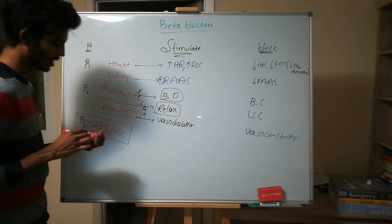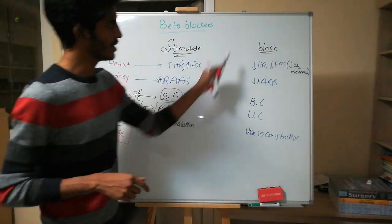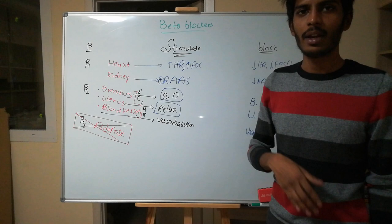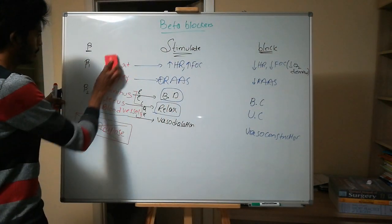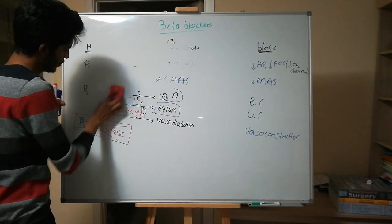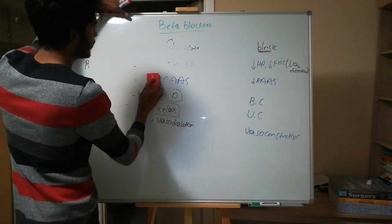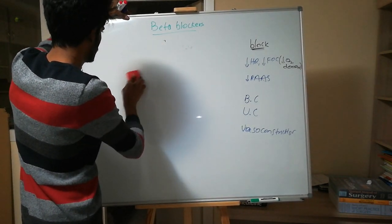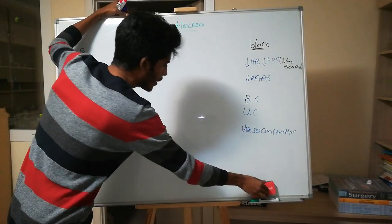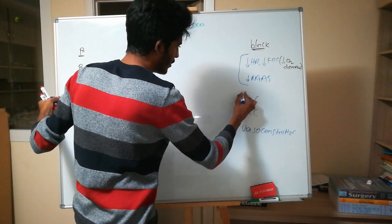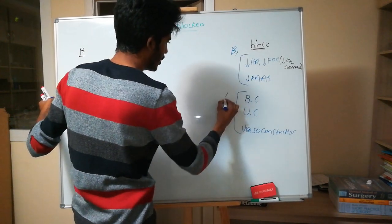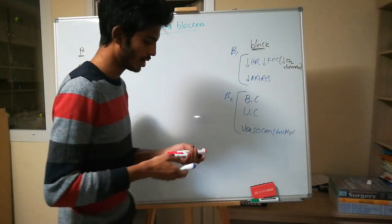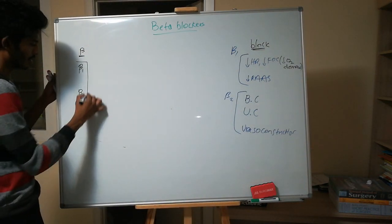Now it's simple: if I block beta 1 — those effects occur; if I block beta 2 — those effects occur. We can have a group of drugs which blocks only beta 1 receptor, or we can have drugs which block both beta 1 and beta 2 receptors.